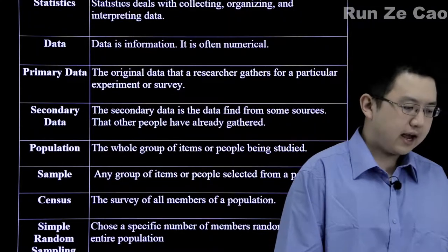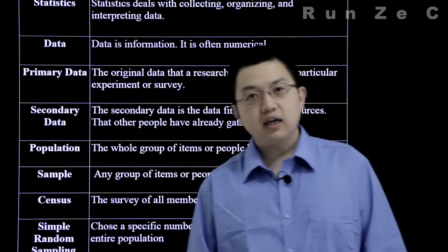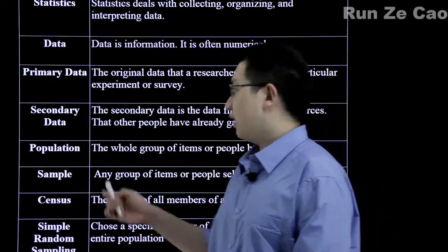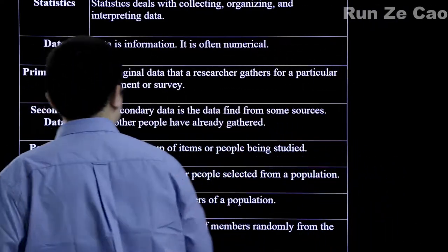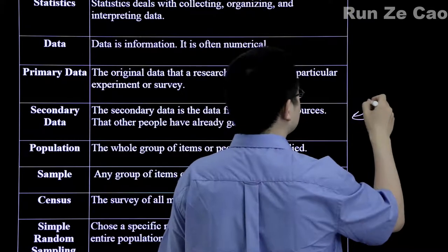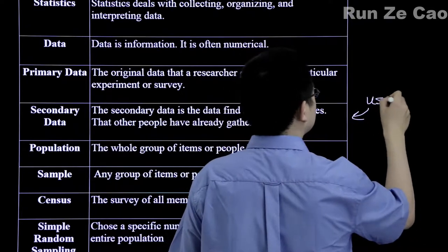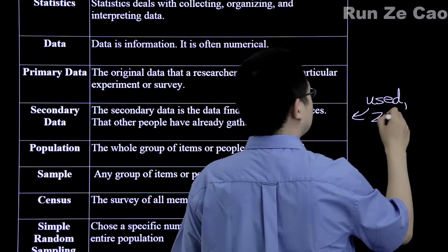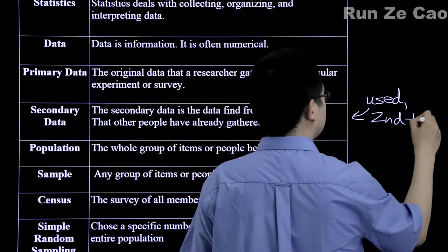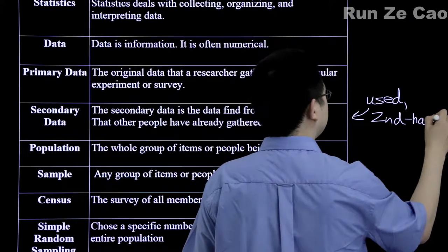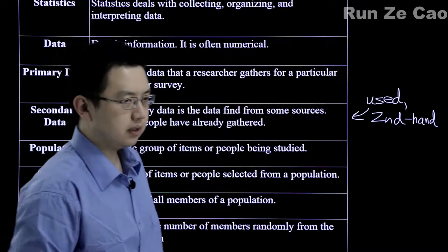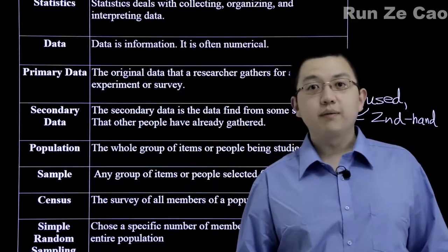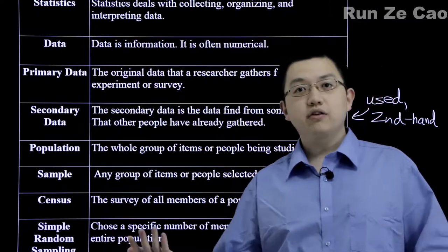What is primary data? Primary data is the first time that this data has been gathered and is being used. Secondary data is second-hand, so to speak — like a used car. Primary data is basically data you gathered yourself from experiments. Secondary data you gathered from other sources. There is no such thing as tertiary data, even though secondary data could actually not be second-hand.